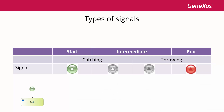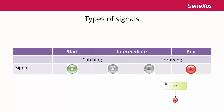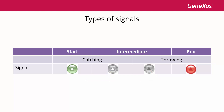A start signal event allows a process to start when a signal is received from another part of the process, or processes hierarchically related to the process where it's defined. For this reason they're always of catch type. When a process flow ends, a signal event of end type allows sending a signal to another part of the process or processes hierarchically related, and they are always of throw type. A signal event of intermediate type can be of throw or catch type, depending on the value of the is-throw property — true or false respectively — and it can be placed in any part of the process, usually between activities.